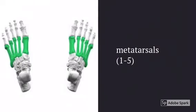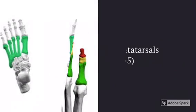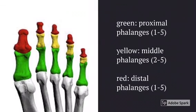Your metatarsals are numbered one through five, starting with the big toe and going to the pinky toe. Your toes are numbered the exact same as your fingers.